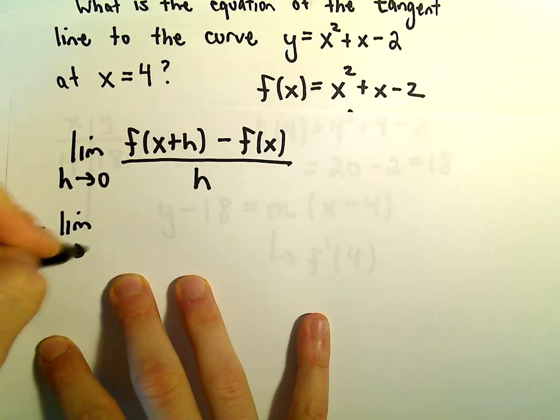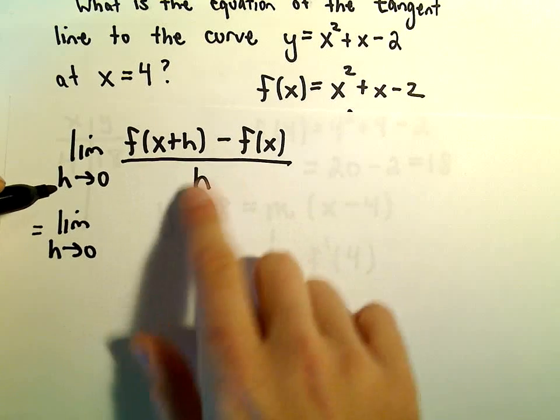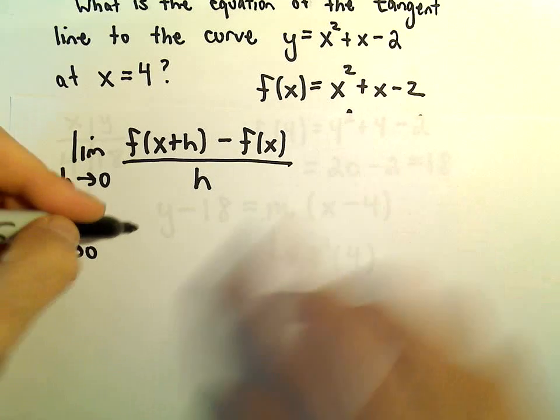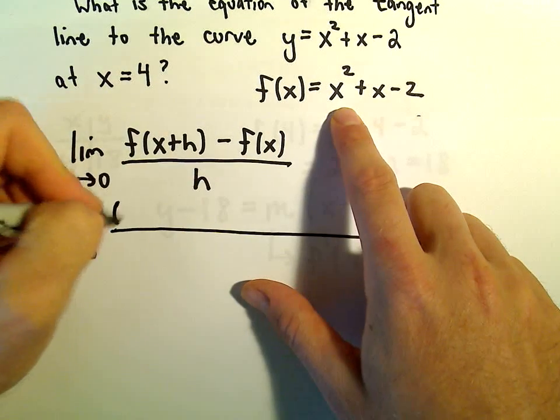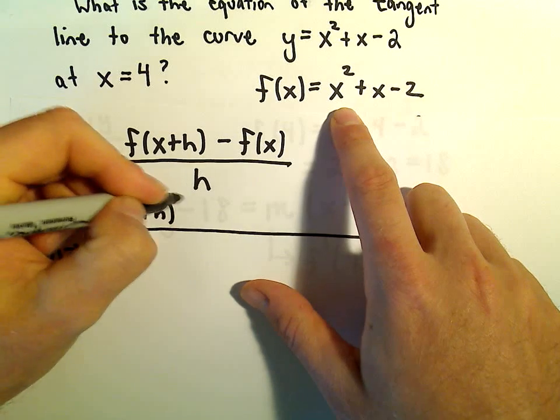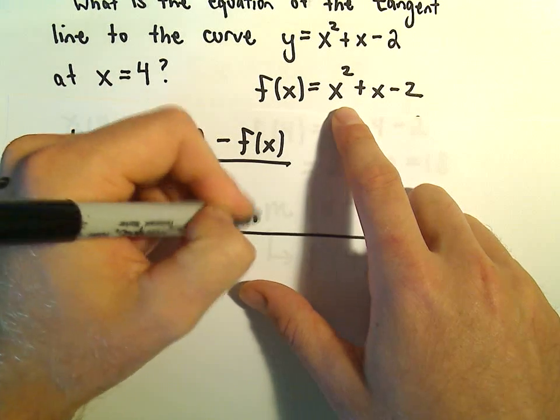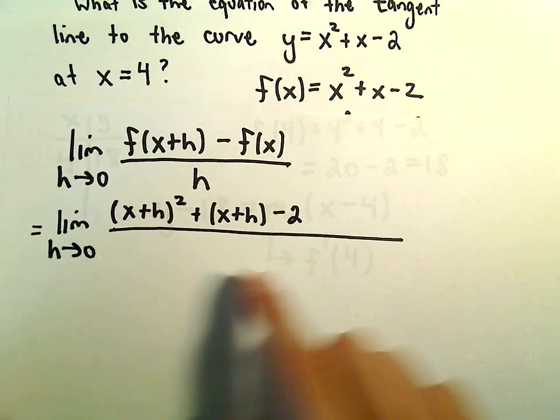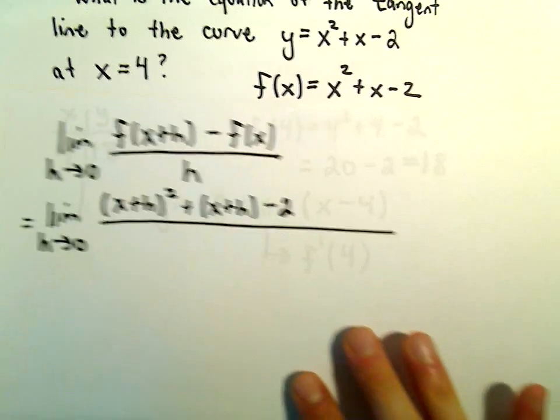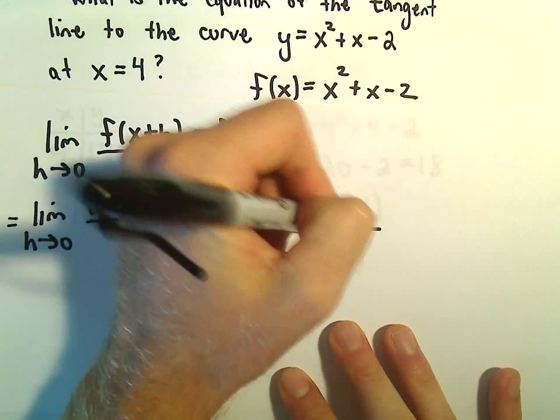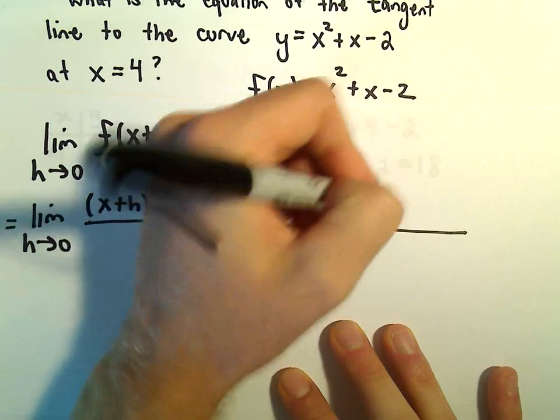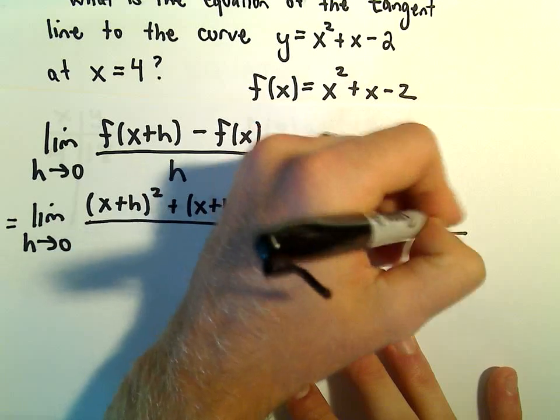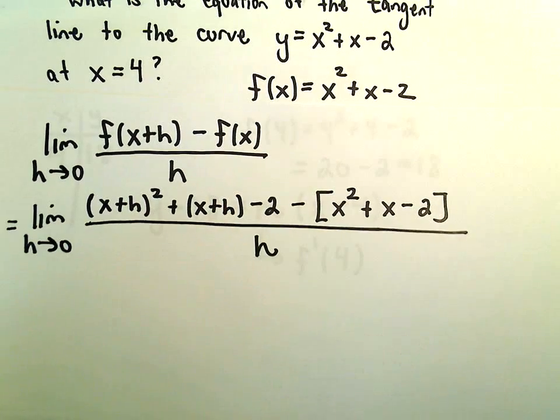Okay, we're going to compute the derivative, f of x plus h minus f of x over h. So everywhere there's an x, I need to replace it with x plus h. So I would have x plus h squared plus x plus h minus 2. So there's our f of x plus h. And then we'll subtract away the original function, our f of x function, which is x squared plus x minus 2. And that's all being divided by h.